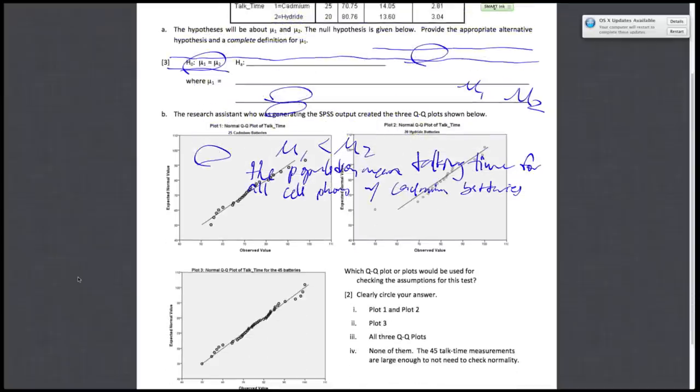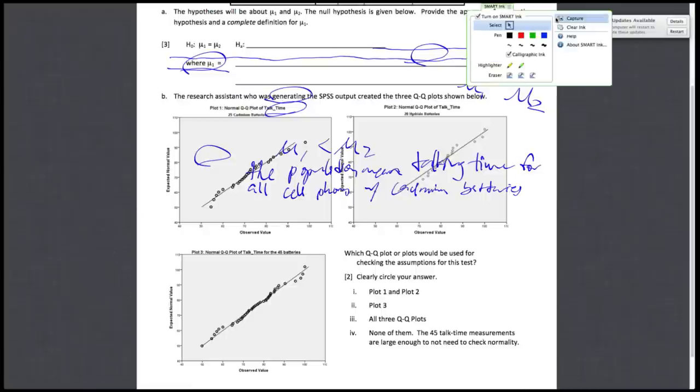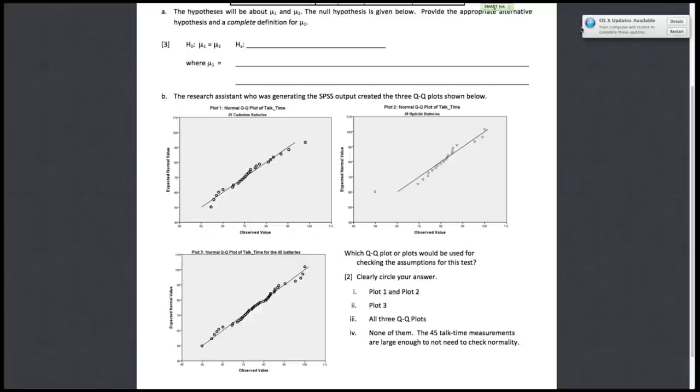Next, we'll move down to part B. So the research assistant who is generating the SPSS output created these three QQ plots shown below. Which QQ plots or plots would be used for checking the assumptions for this test? So QQ plots, as a reminder, are used to check normality of the population. And incidentally, if you are interested in using this test, you have to make sure that the populations that you're getting the samples from are also normal. So you need to make sure that both populations are normal.